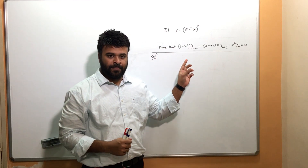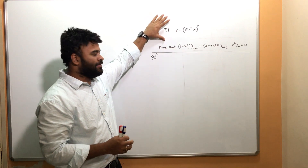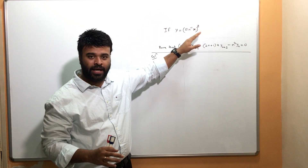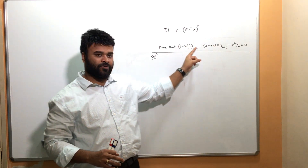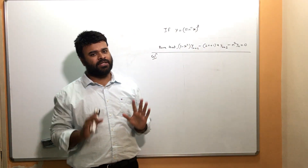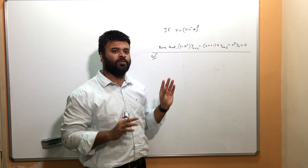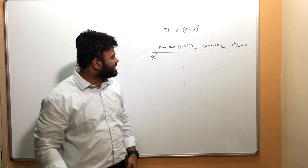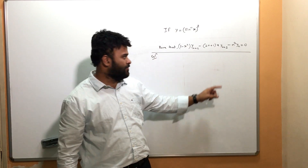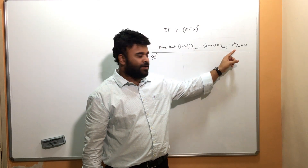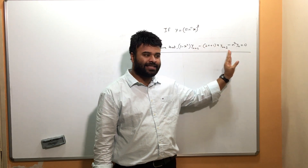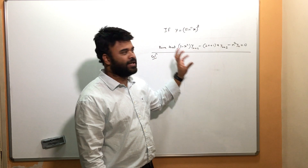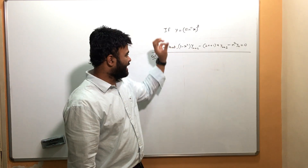Let's look at this question. The given part is y = (sin⁻¹x)² and we're supposed to prove something. Whenever you come across any question, the first thing you should do is look at what you want to prove. Here I see y_n, y_{n+1}, and y_{n+2} — basically nth derivatives — so this is a question of successive differentiation.